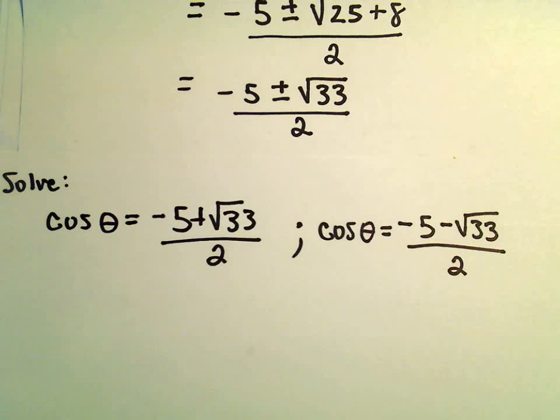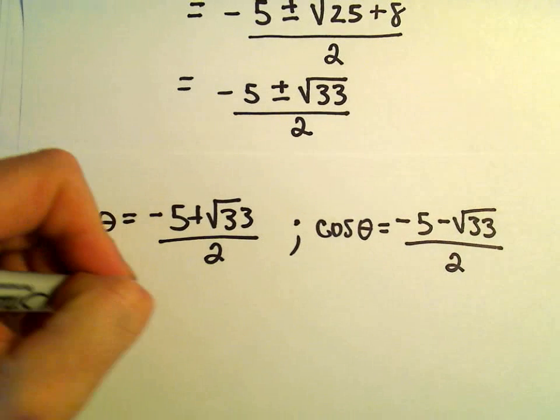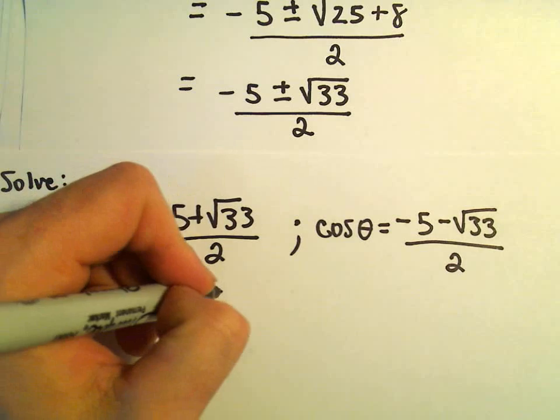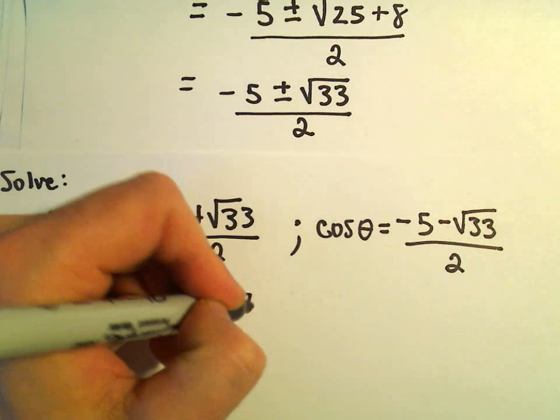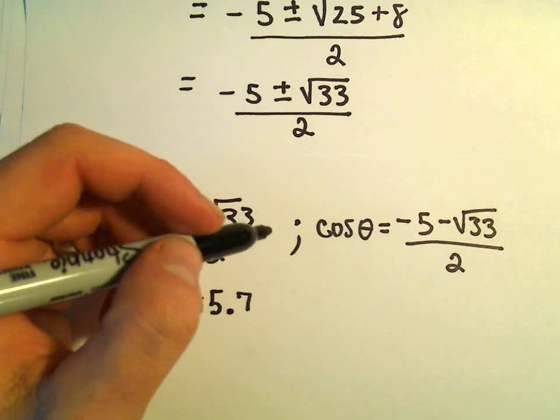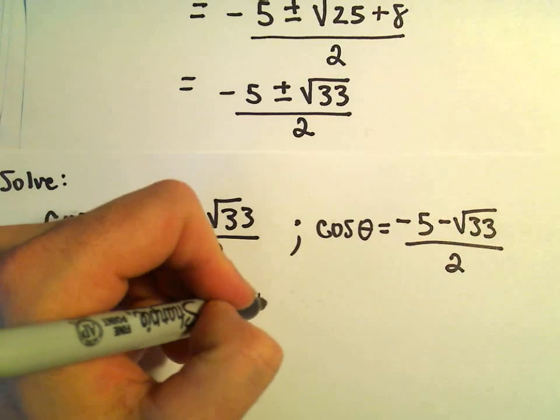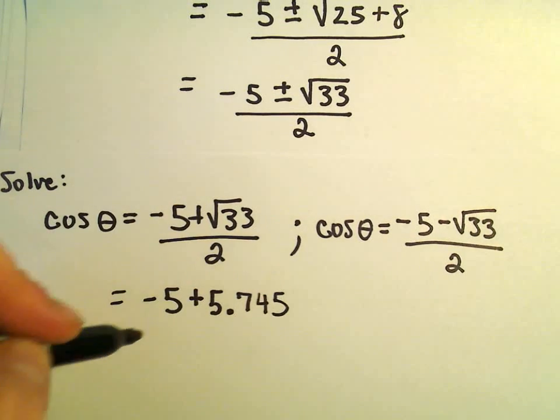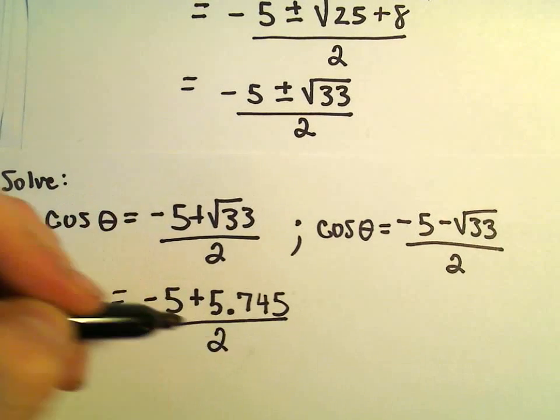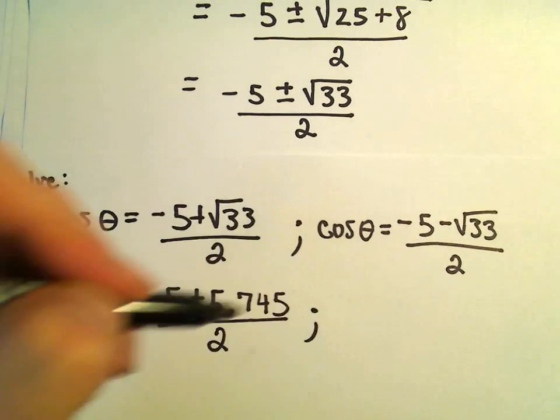Let's maybe approximate here a little bit. I'm going to approximate the square root of 33. The square root of 33, I'm getting that to be roughly equal to 5.745 when I round to 3 decimal places.